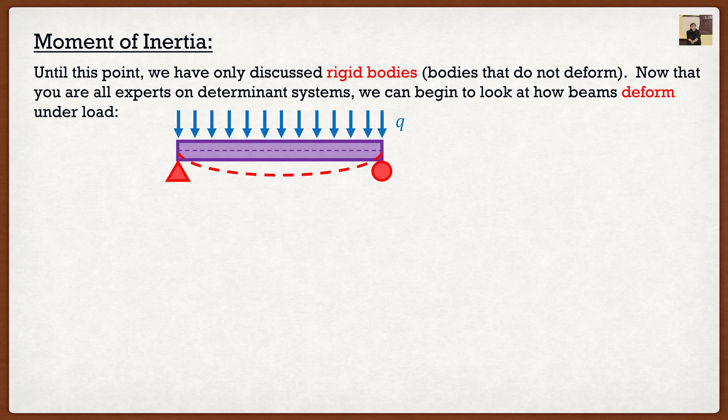Now it turns out, for linear elastic materials, we can actually measure the deflection at certain points. For instance, if I wanted the deflection, which I'm going to call delta, at the midspan, I can actually calculate it using the following formula, where it's 5 times q times l to the 4. So q is our distributed load, you all know what that is, l, that's going to be the length of the beam, again, you all know what that is. And then it's divided by 384 EI.